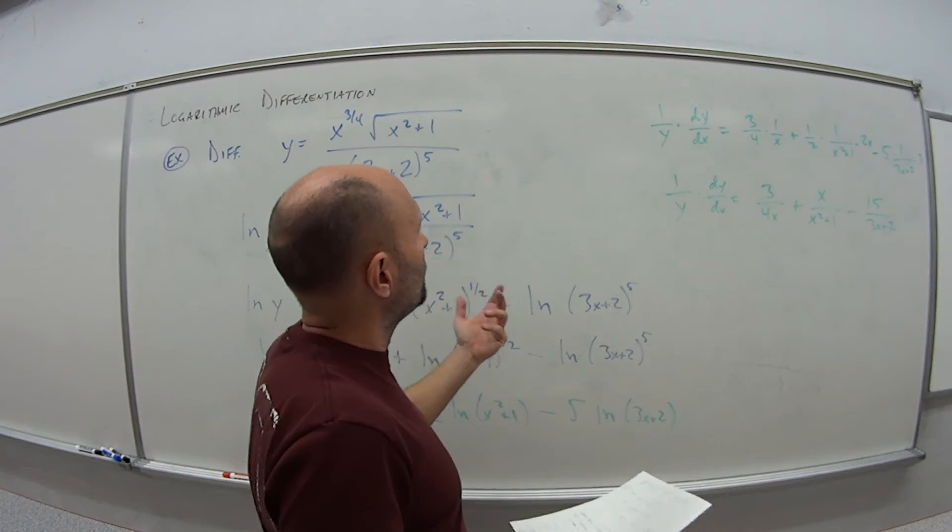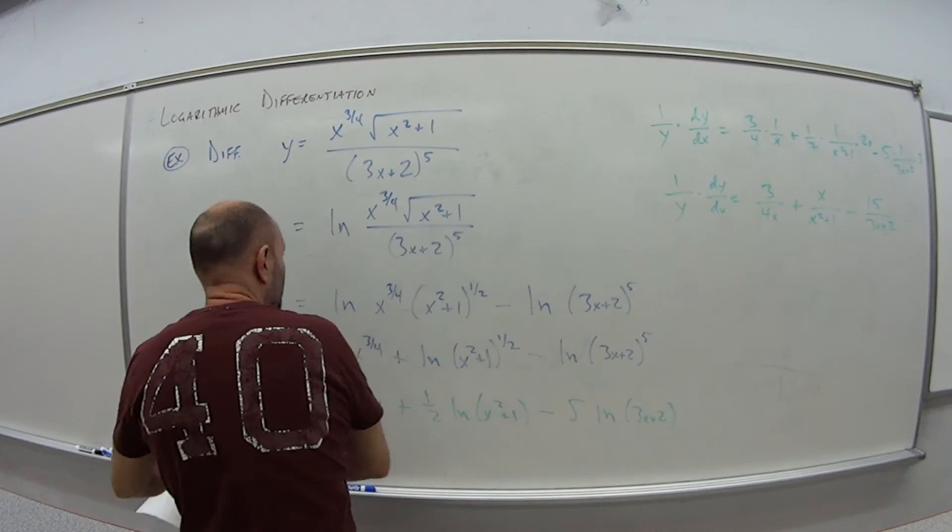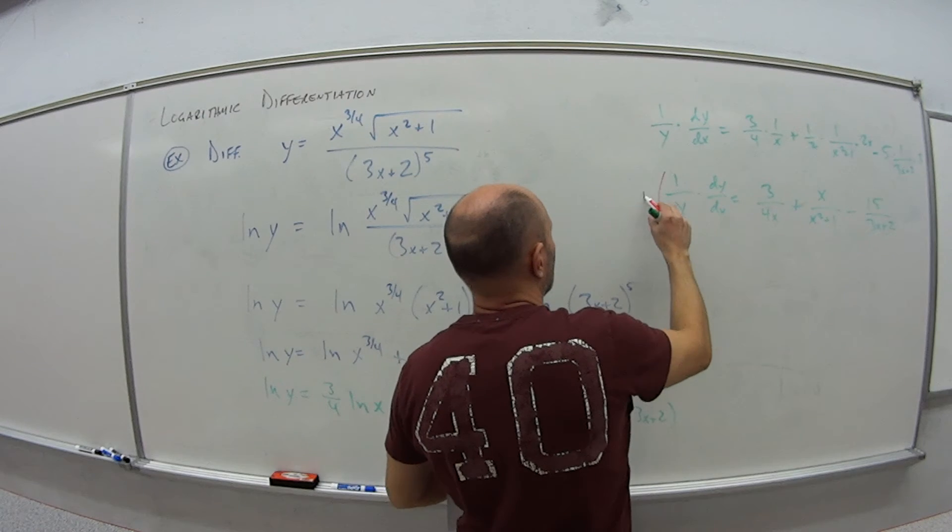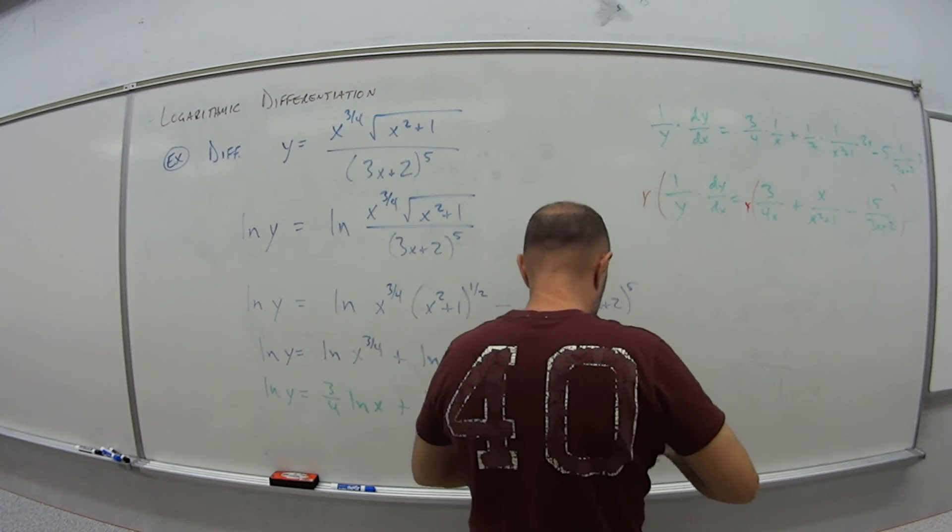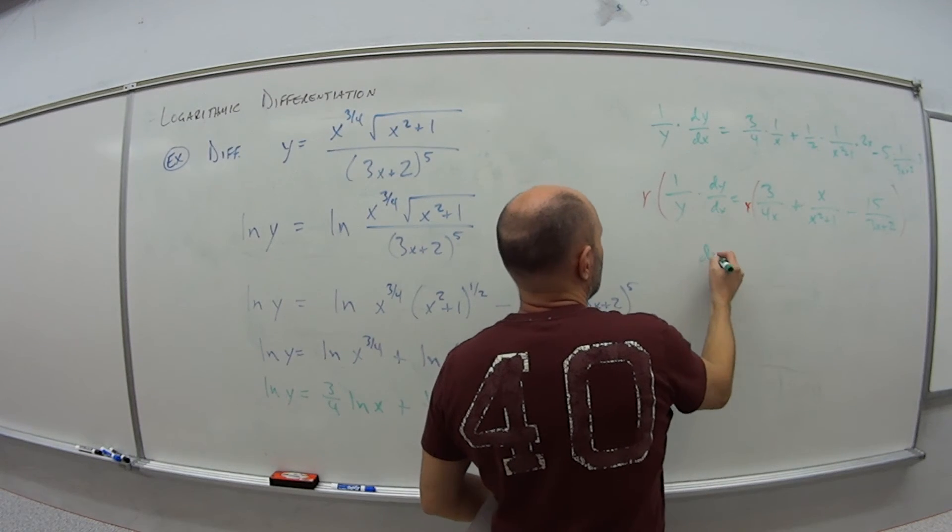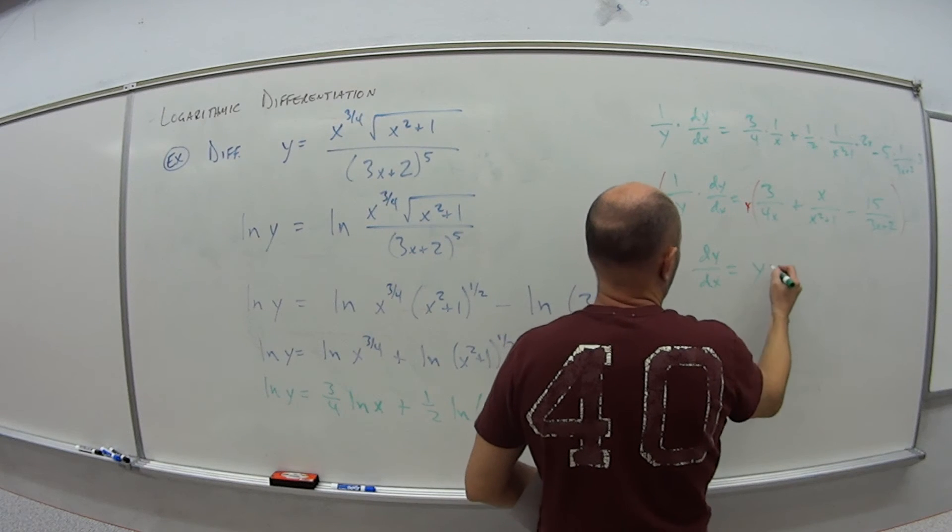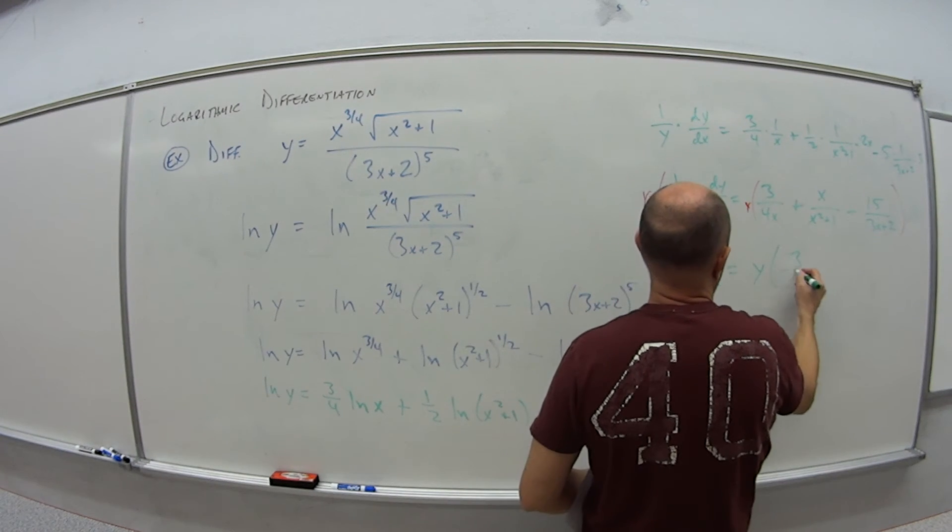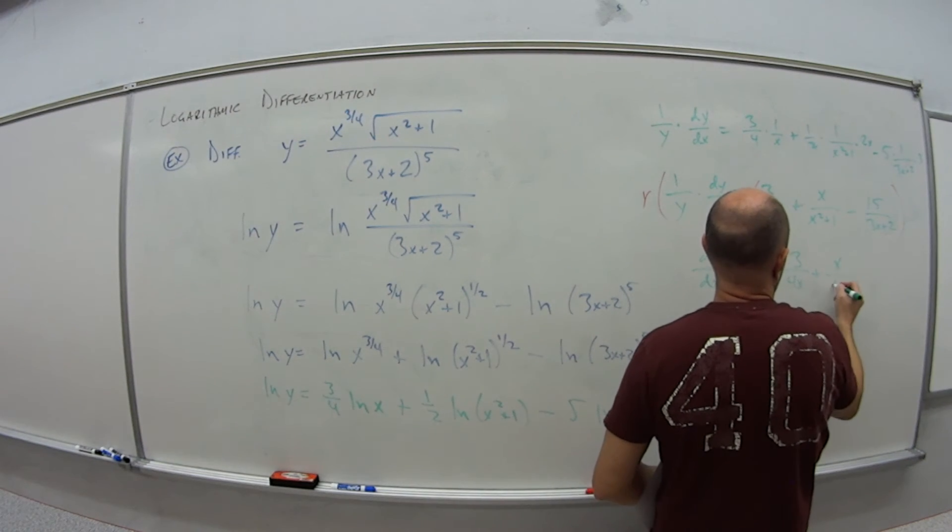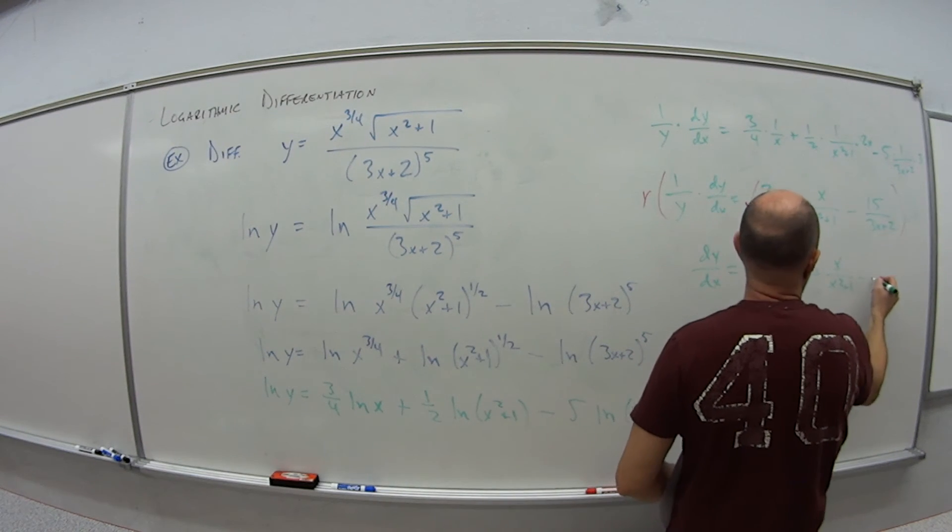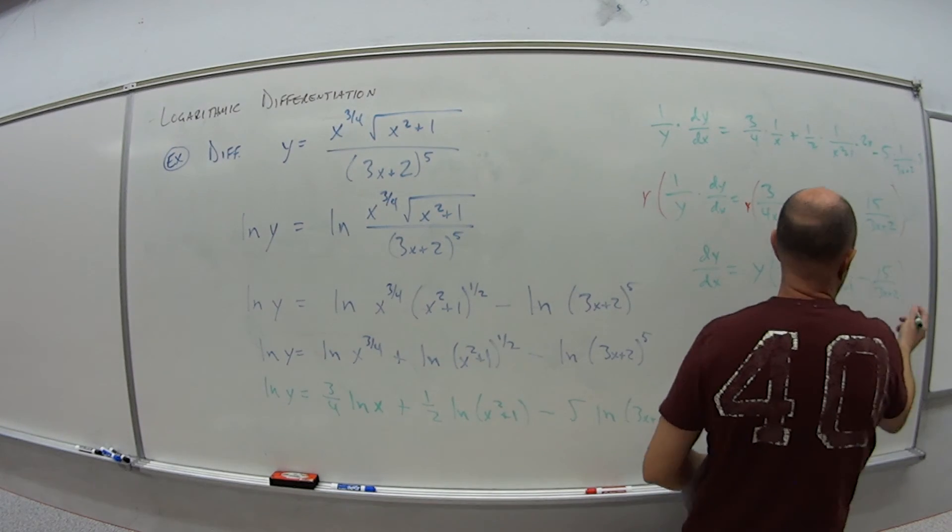And I want the derivative, so I just want dy dx by itself, so I'm going to multiply both sides by y. So I get dy dx, the derivative of this function to start with, is just y times this piece: 3 over 4x plus x over x squared plus 1 minus 15 over 3x plus 2.